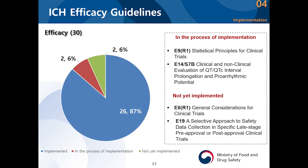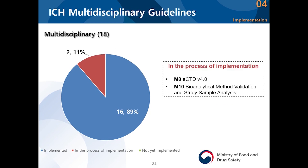Next we have QT intervals, and then E8 and E19. E8 is in R1 and has just begun very recently. E8 has been implemented into our notifications, and R1 has just begun. As for multidisciplinary guidelines, ECTD and M10 are in the process of implementation.